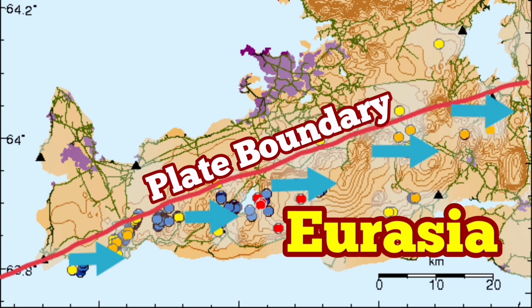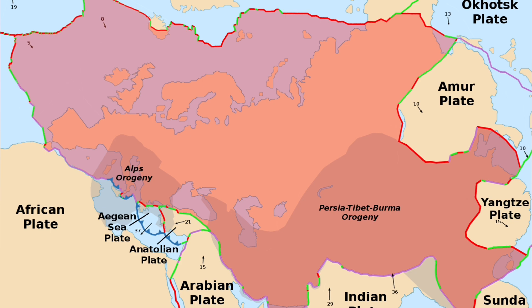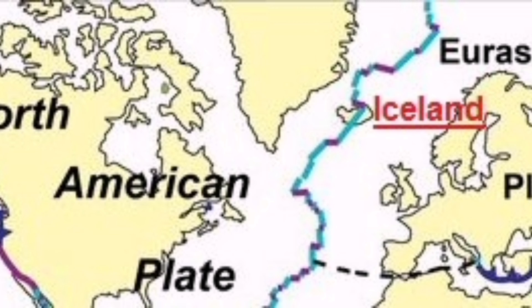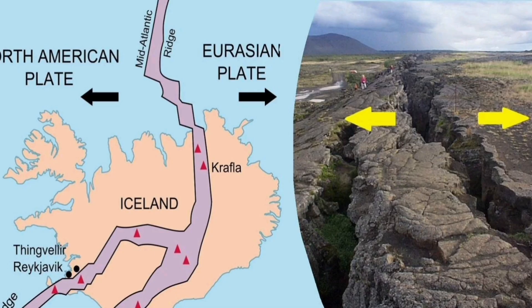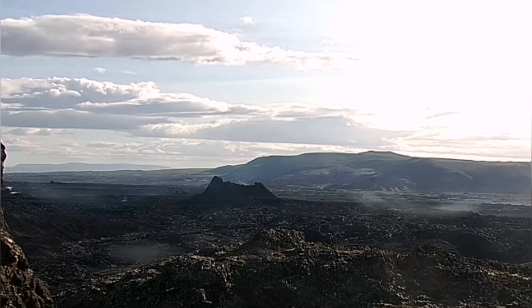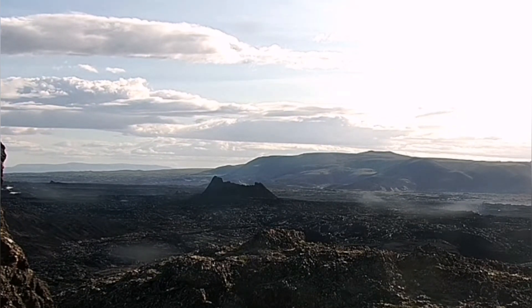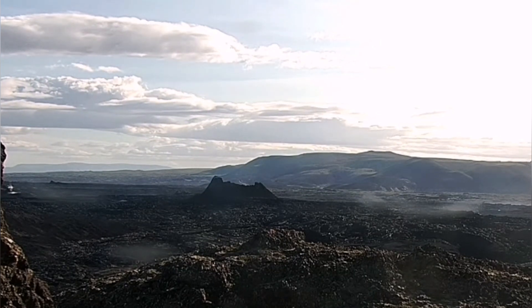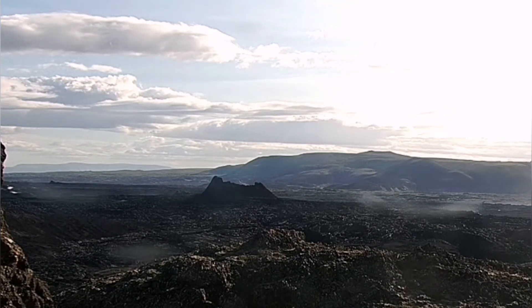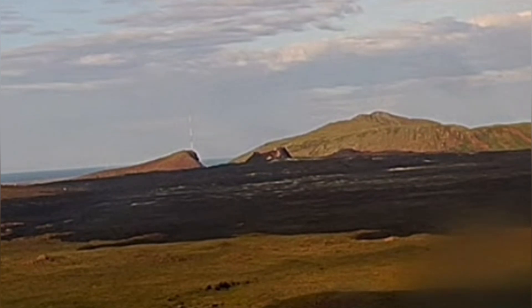Eurasia is one of the biggest plates on planet Earth, probably second to the African plate. You can see that it has big subduction zones with the Yangtze plate, the Amur plate, and the Pacific plate. Practically, the pulling due to slab weight and gravity is more than that of the North American plate. That's the reason we have these sequences of earthquakes in that area, across all these volcanic systems — Sourcing, Hengill, Reykjanes, Eldvörp, and others.